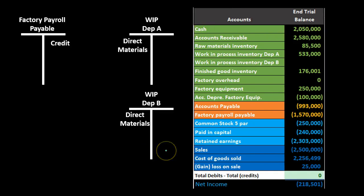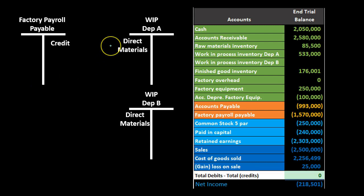The next item to add to work in process is labor. When thinking about labor, you must think about payroll. There are three things always involved in inventory: direct materials, direct labor, and overhead. With the materials already in work in process, the next step is factory payroll.